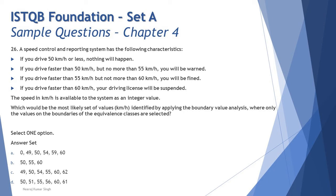The speed in km/h is available to the system as an integer value. Which would be the most likely set of values in km/h identified by applying the boundary value analysis, where only the values on the boundaries of the equivalence classes are selected? Now you would see here, first of all, you just have to apply the same context which you learned in boundary value analysis. That is to derive the ranges from the given scenario, and first of all, that's where you need to be appropriate and correct. If your table is correct, your answer will be right. If your table is wrong, your answer will be wrong as well.